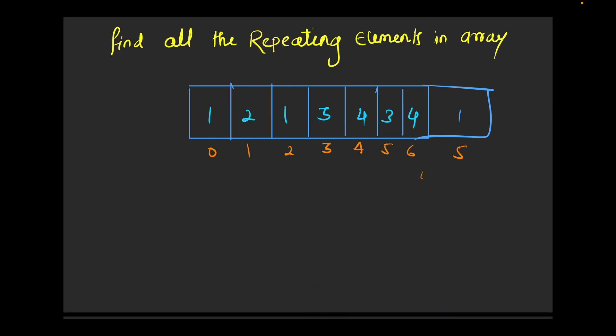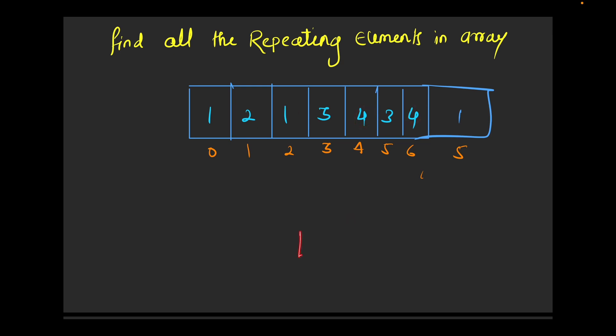Today's question asks us to return all the repeating elements — meaning if a single element occurs two or more times, we have to return it. For example, one has occurred three times so we print one. Two has occurred only once so we don't print it. Three has occurred two times so we print three. Four has also occurred two times so we print four. Our answer will be one, three, four.